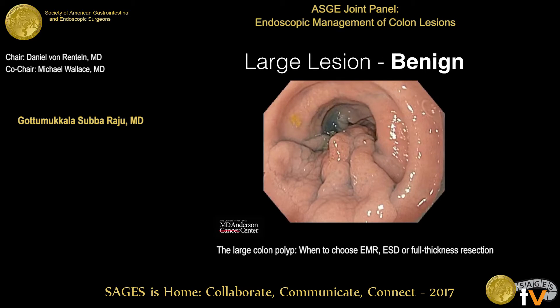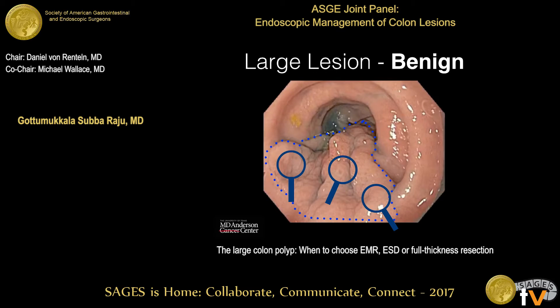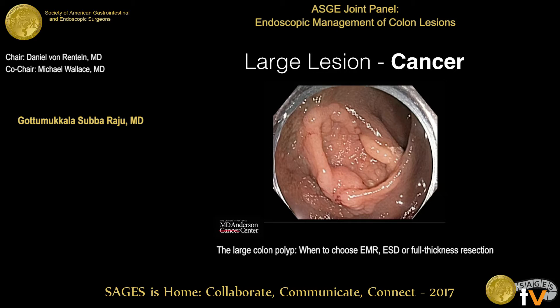Here is a large lesion — as you scan the surface, you can say this is a benign lesion, so you could go ahead with resection. Here is another lesion referred as a benign tubular adenoma on biopsy, but the biopsy was not done at the right place. Whenever you see a lesion that has a flat area or a bald area, that's where you should focus your biopsy — that's where you will find cancer. In this lesion, the abnormal area came back as cancer, and these are lesions you should avoid resecting.